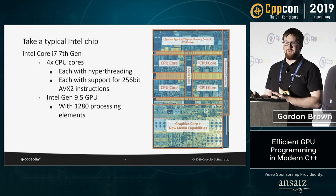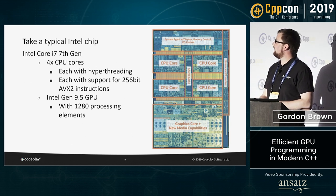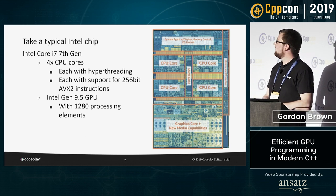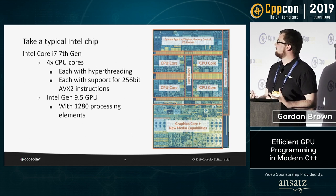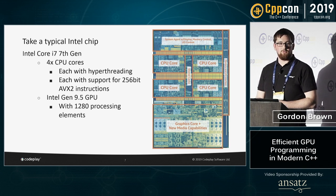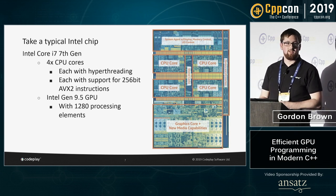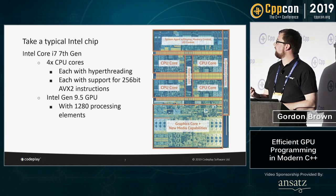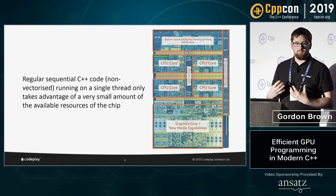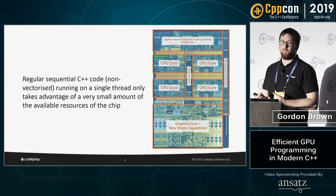This is a slide I've shown before — a little out of date now, but it gets the point across. This is a typical Intel Core i7 7th Gen chip die view. On this chip you have four CPU cores, each supporting hyper-threading and 256-bit AVX2 instructions for vectorization. It also has Intel HD graphics with 1280 processing elements.